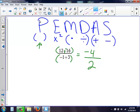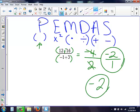I'm not done, because I can still simplify this fraction. 2 goes into negative 4, negative 2 times. 2 goes into 2, 1 time. So my answer is negative 2. You can write it as negative 2, you don't have to have that 1 on the bottom.